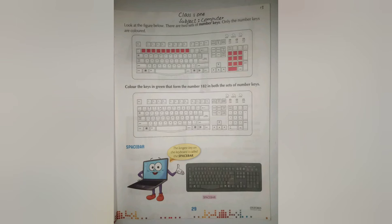The keyboard has a lot of keys, like alphabet keys, delete key, enter key, numeric keys. Everything has a label written on it. For example, alphabet keys have A, B, C, D written on them.